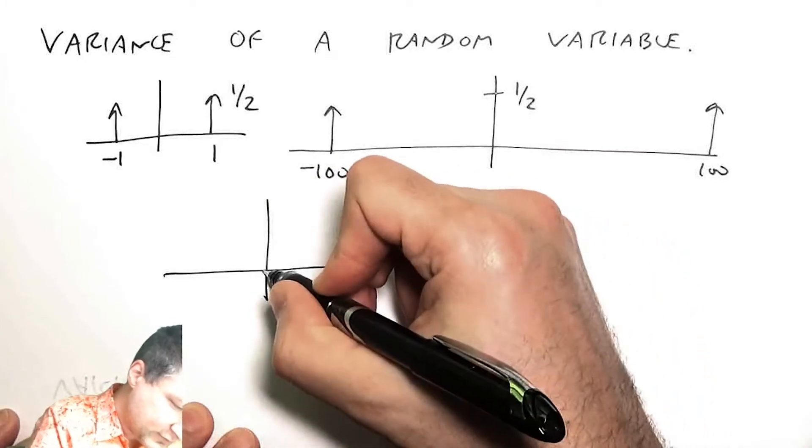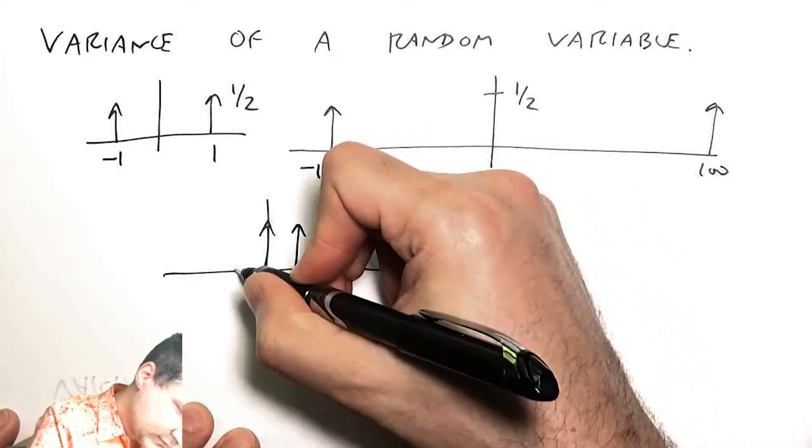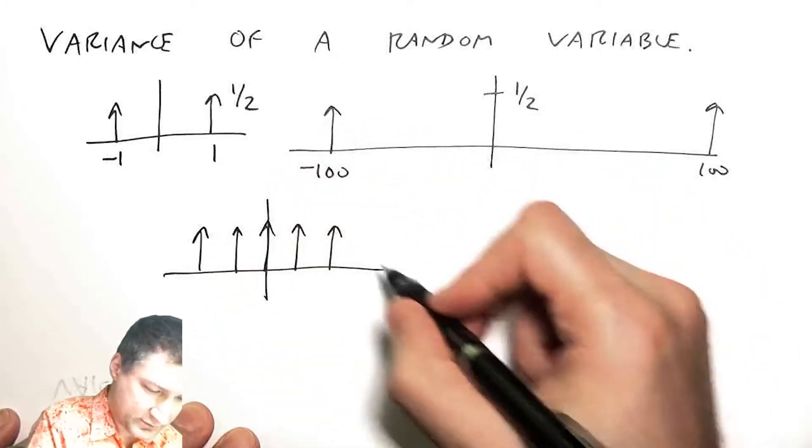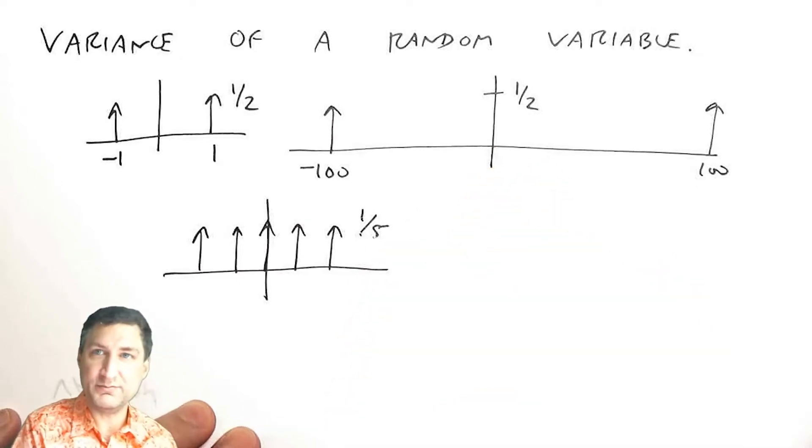I have a uniform random variable centered around zero with each probability being 1/5.